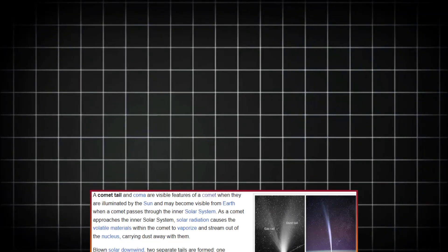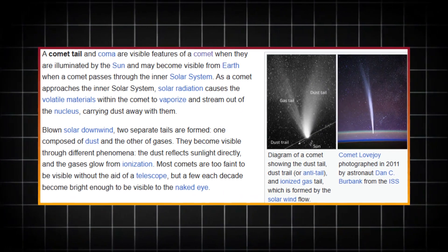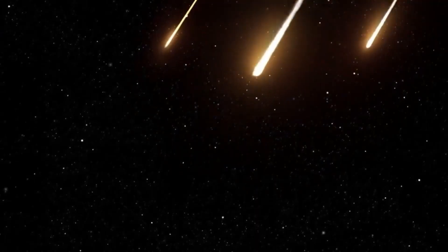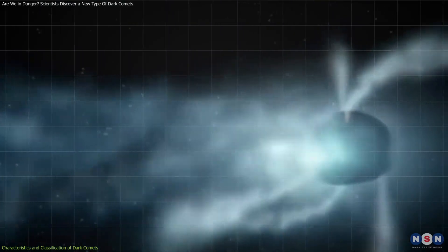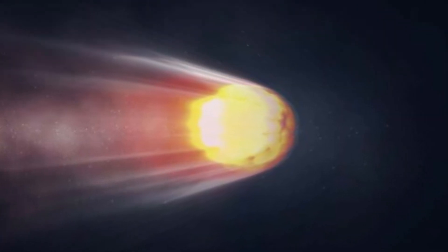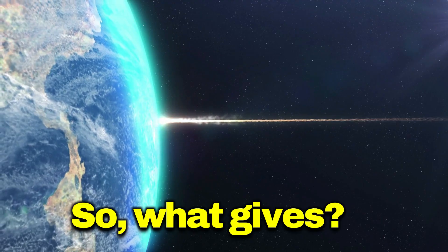But here's the twist. Dark comets don't seem to have the classic tail or coma. Yet, they still exhibit comet-like behavior. They accelerate as if they are ejecting gas, which is the hallmark of cometary activity. So what gives?